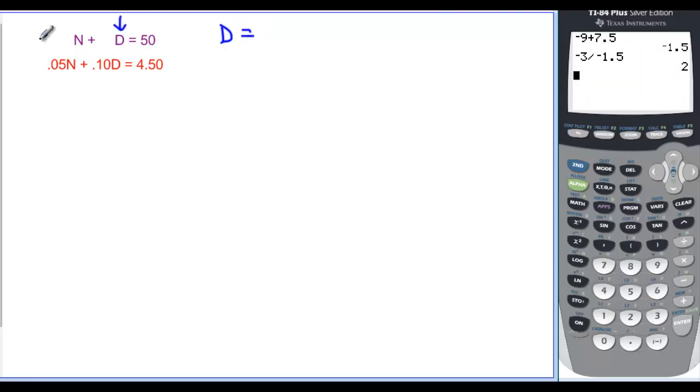So if I solve for d, I'm going to subtract n from this side, and that leaves me with d, and subtract n from the 50, leaving me with 50 minus n. So plugging into my bottom equation, I have .05, and I have n, because that's the variable I'm going to work with, plus, and then .1, remember I don't have to carry the 0 along, times the 50, let's put that in blue, 50 minus n,